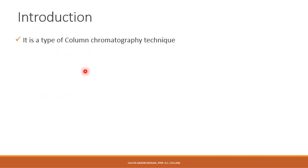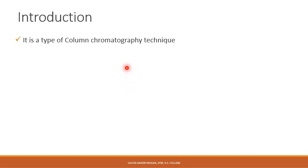Ion exchange chromatography comes under the type of column chromatography. The basic idea of column chromatography is that you have a column or a tube which contains the stationary phase, which is solid in nature, and through the stationary phase you have the mobile phase, which is a liquid or fluid that can pass through the solid stationary phase and get separated accordingly.